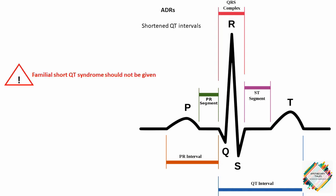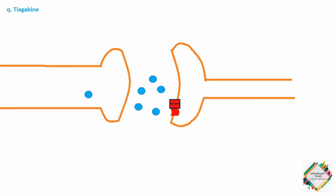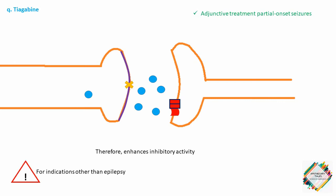The next drug is tiagabine. This blocks GABA uptake into presynaptic neurons, permitting more GABA to be available for receptor binding, and therefore enhances inhibitory activity. Tiagabine is effective as adjunctive treatment in partial onset seizures. In post-marketing surveillance, seizures have occurred in patients using tiagabine who did not have epilepsy. Remember, tiagabine should not be used for indications other than epilepsy.